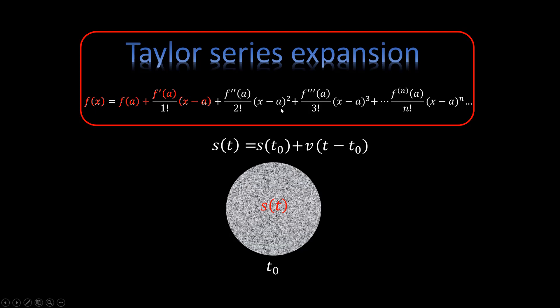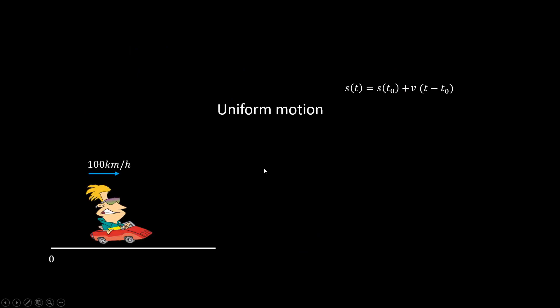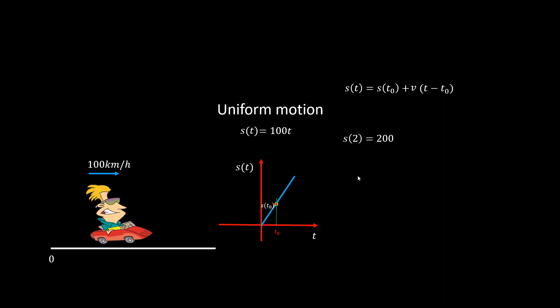These extra terms exist because the velocity is not constant. Take motion as an example. If it's uniform, the position profile is linear. Take a snapshot of the status at an initial point — we get an initial status. Then the new status can be broken down into two pieces: the initial status and the change.